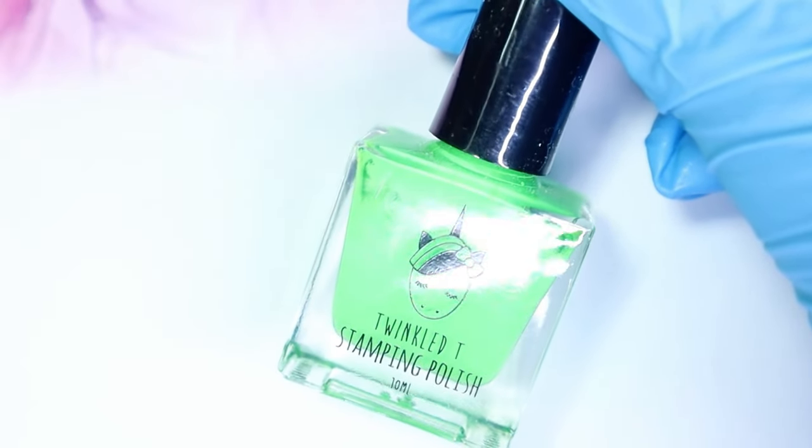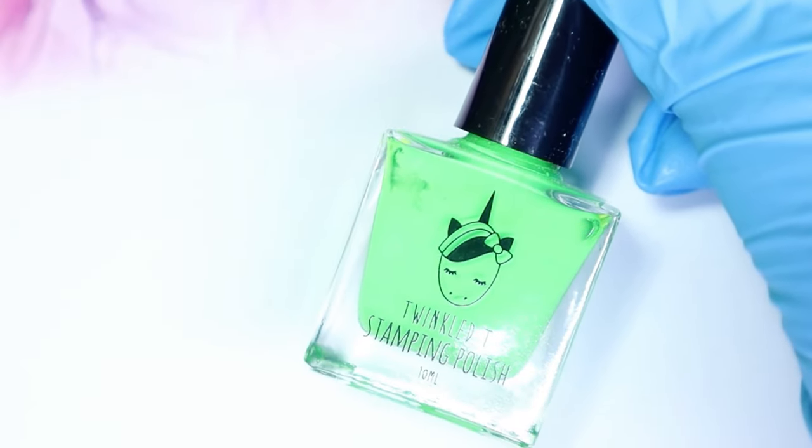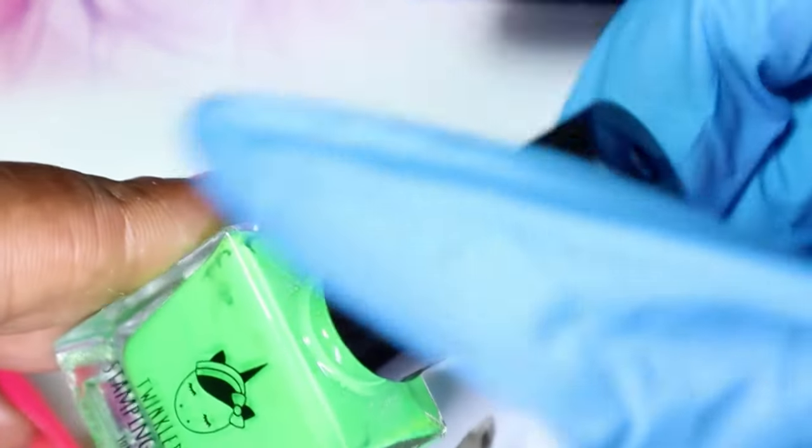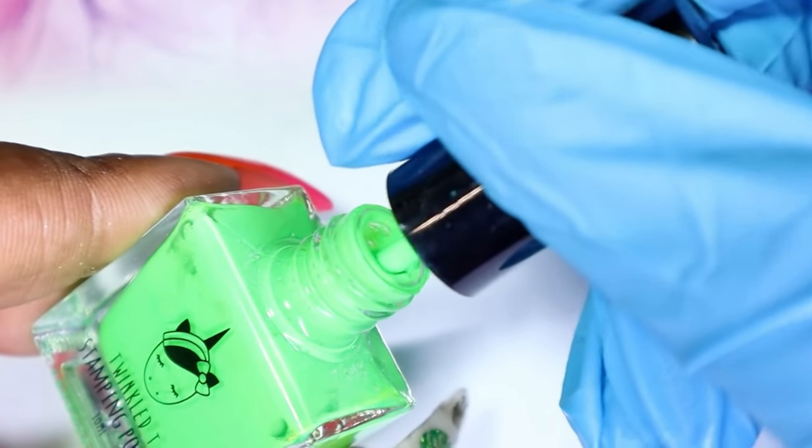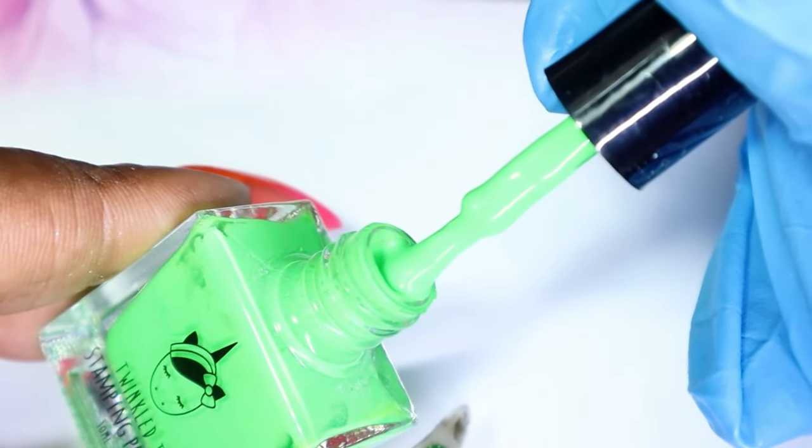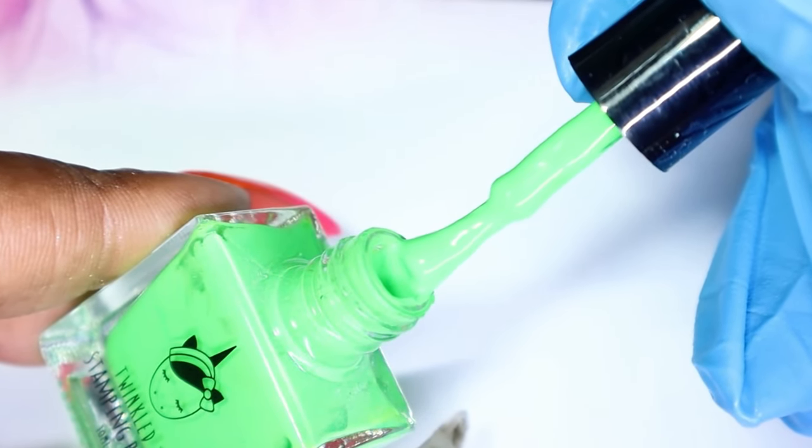Next up, we have this gorgeous neon green. And this one is called No Filter. I actually used this in a video. I used this for stamping for my Nightmare Before Christmas nails. You should go check out that video if you haven't.